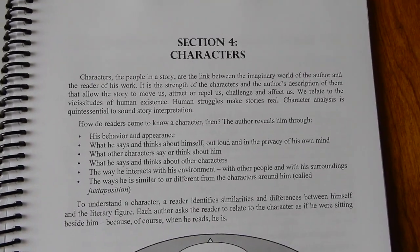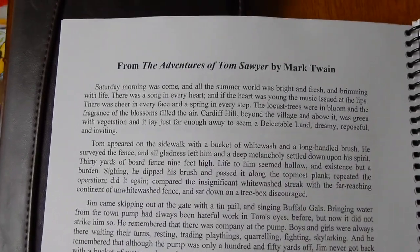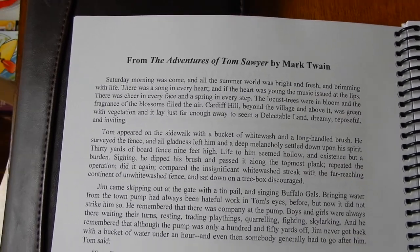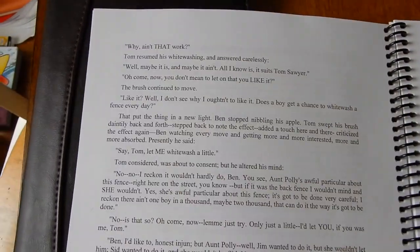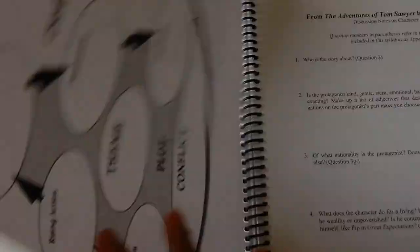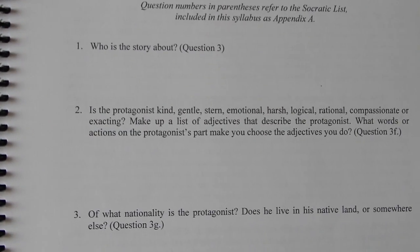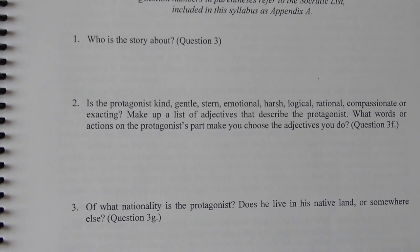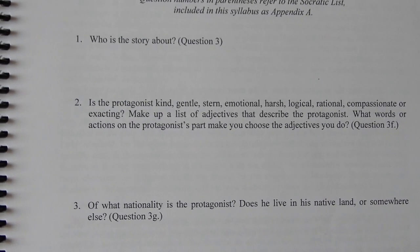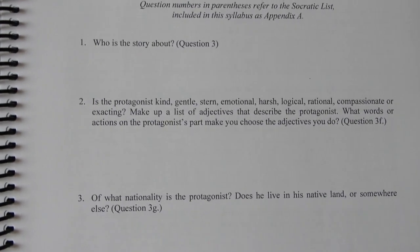Section four is characters and he uses The Adventures of Tom Sawyer to review characters. He'll ask questions like 'Is the protagonist kind, gentle, or stern?'